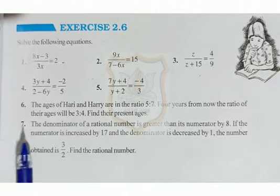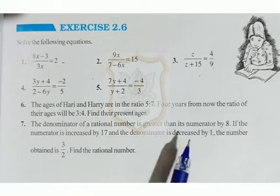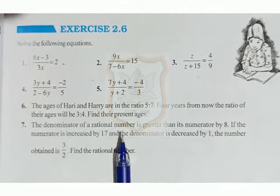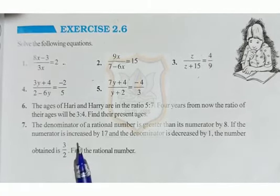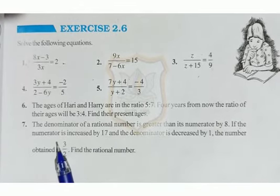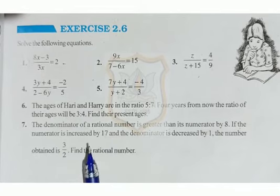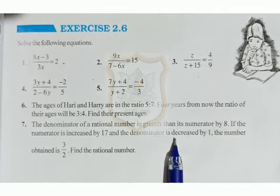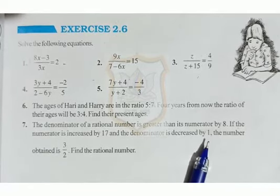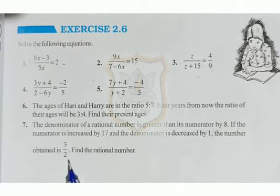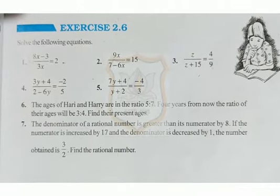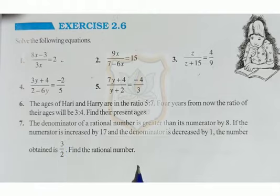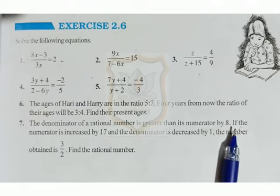The last sum of this exercise: the denominator of a rational number is greater than its numerator by 8. If the numerator is increased and the denominator is decreased by 1, the number obtained is 3 upon 2. Find the rational number. Students, we need to read the question 2 or 3 times to understand the steps. Then our sums become very easy.